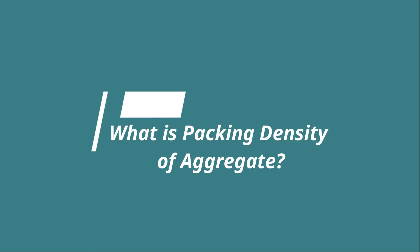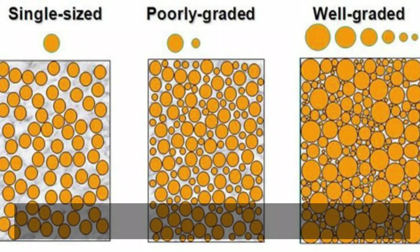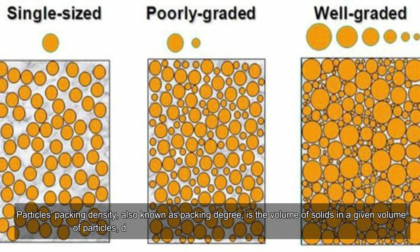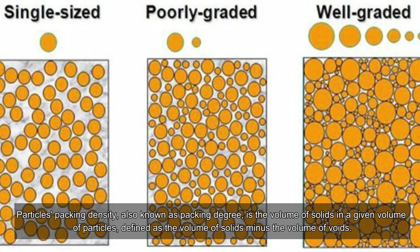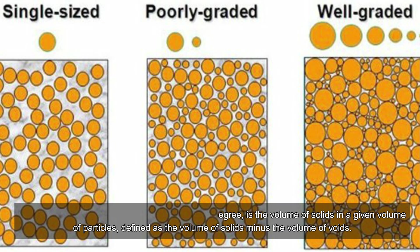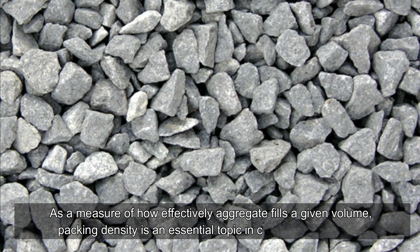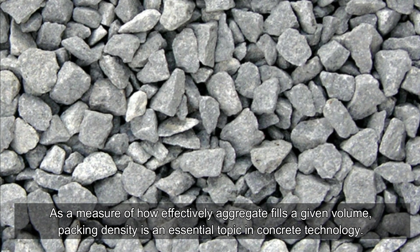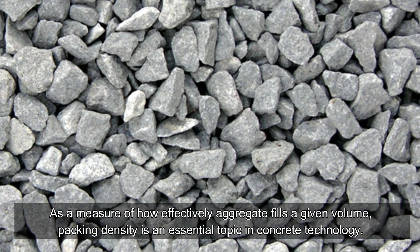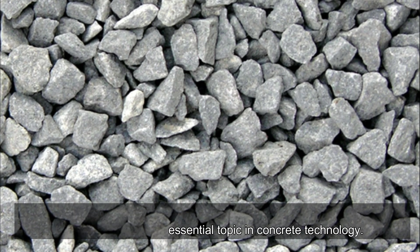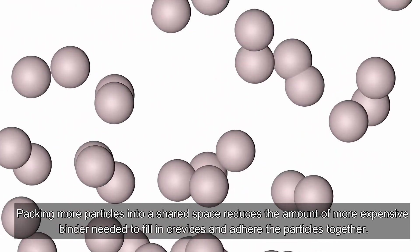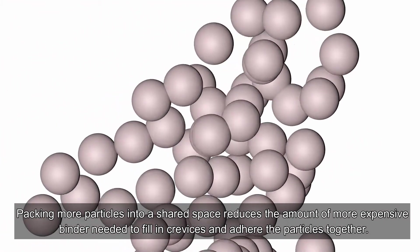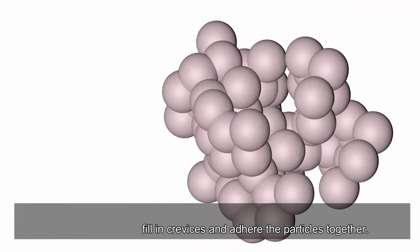Packing density, also known as packing degree, is the volume of solids in a given volume of particles, defined as the volume of solids minus the volume of voids. It is a measure of how effectively aggregate fills a given volume, and is an essential topic in concrete technology. Packing more particles into a shared space reduces the amount of more expensive binder needed to fill crevices and adhere the particles together.